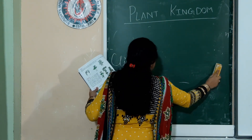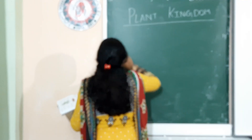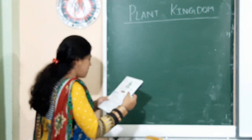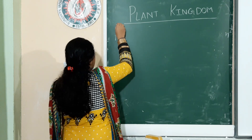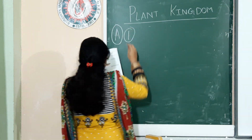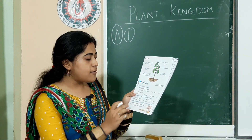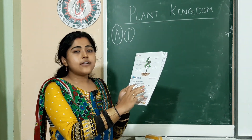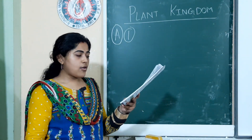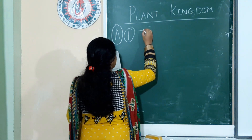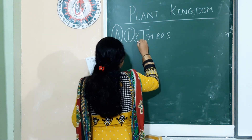Now we come to the exercise part, which is on page 7. First, take the correct answers. Question A: Tall and strong plants are called — the options are creepers, climbers, and trees. The answer is option C: trees.